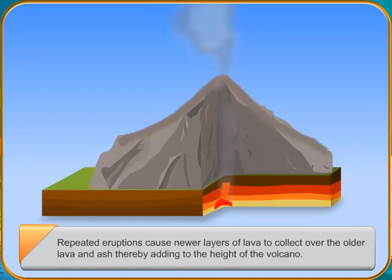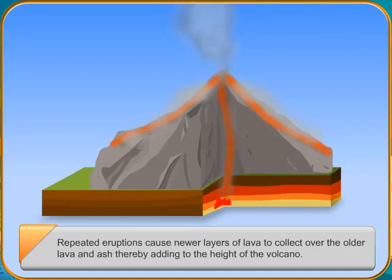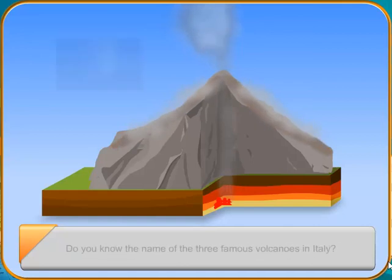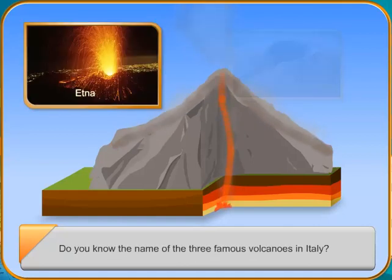Do you know the name of the three famous volcanoes in Italy? The three famous volcanoes in Italy are Aetna, Vesuvius and Stromboli.